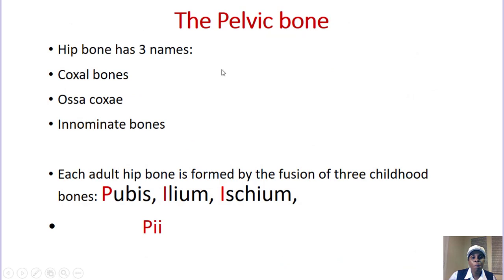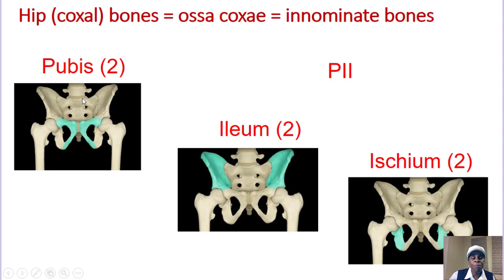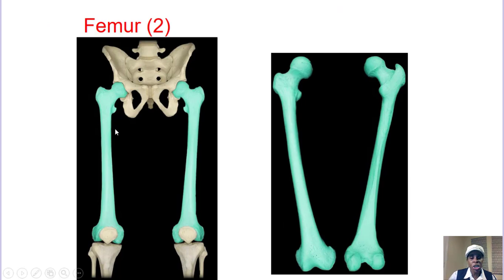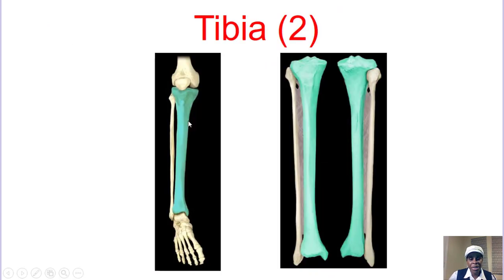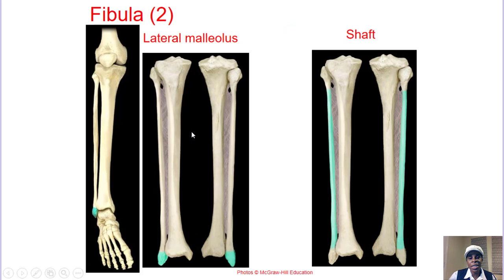The pelvic bone has three names: coxal bone, os coxa, or innominate bone. It has three parts: the pubis (anterior, in the pubic area), the ilium (the elevated top part), and the ischium (the part you sit on). Then you see the femur, the patella, and the tibia — tough — and the fibula — fine.